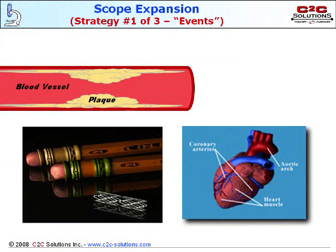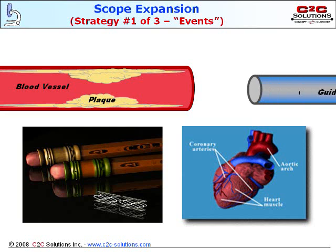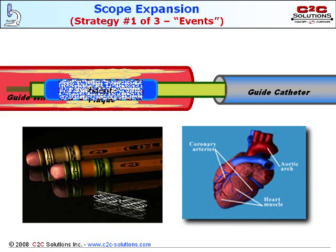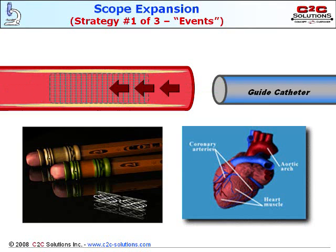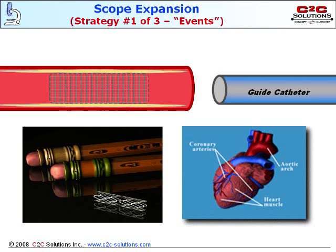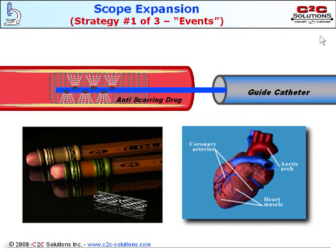Another example using the event strategy of scope expansion is in the medical industry — it deals with heart disease. When your diet is poor or genetics have dealt you a bad hand, you may get plaque buildup in your arteries. Stents were introduced in the 90s as an enhancement to angioplasty, a procedure in which tiny balloons and a stent are inflated inside the blockage of the blood vessel, which creates a broader channel for blood flow. Stents were great, but often cause tiny micro cuts inside the blood vessel. Because of this, a common procedure after the stent is placed is to insert another catheter that sprays an anti-scarring drug to minimize scar tissue buildup. Not long after the stent's introduction did they become a commodity. To differentiate themselves, one manufacturer using the scope expansion method came up with the idea to combine this extra anti-scarring drug procedure into the stent — a drug-coated stent that eliminated this relatively time-consuming additional step.